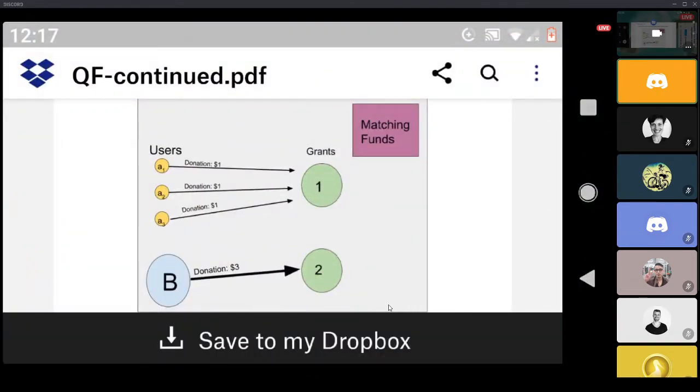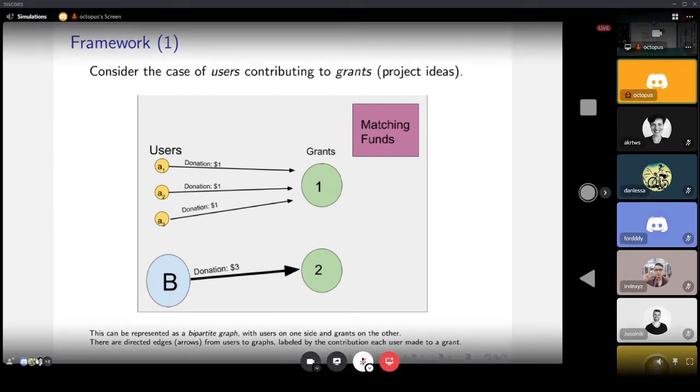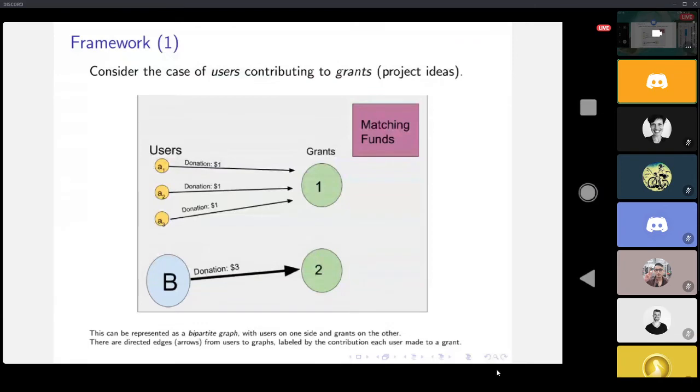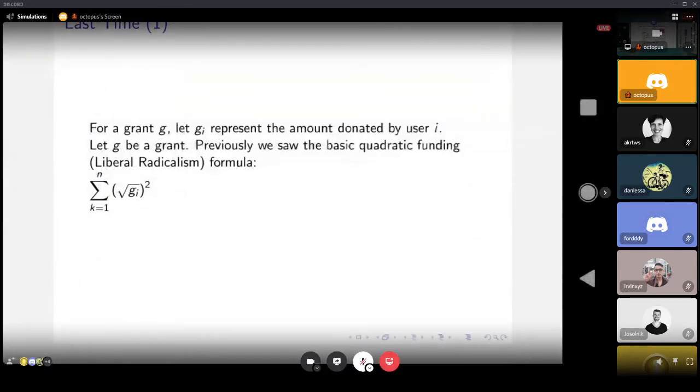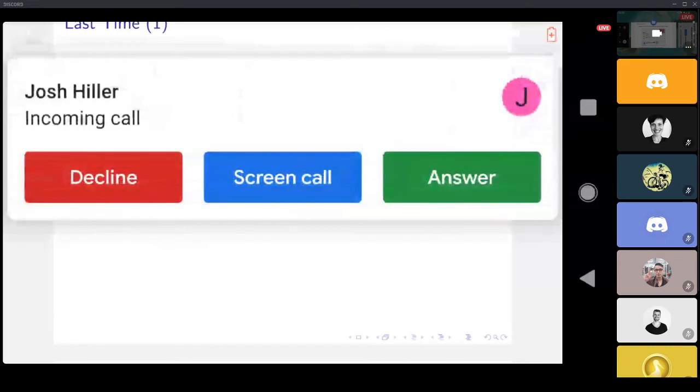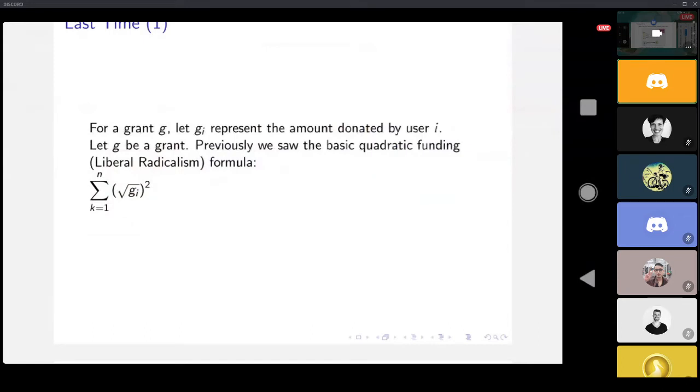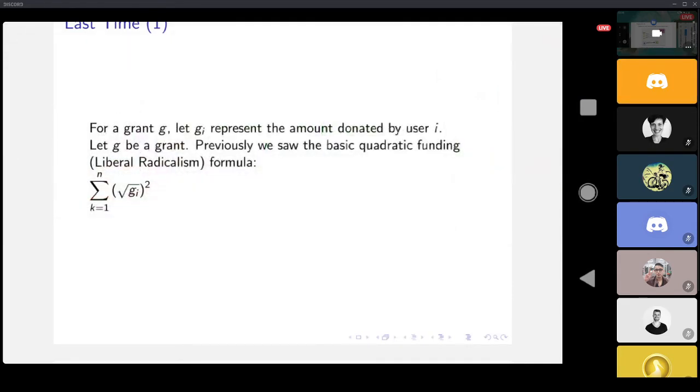All right, so we're considering the same setup as last time. We just did the basic Liberal Radicalism algorithm, and this time we're going to go into the actual modified implementation that Gitcoin Grants uses. We saw the basic quadratic funding formula last time, which is if you have g_i as the contribution from user i, then you take the square roots. This is actually a very bad type of parenthesis - it should be outside the summation.